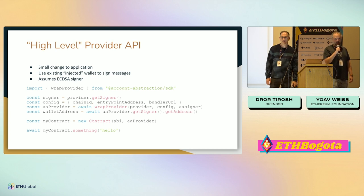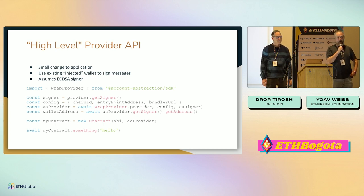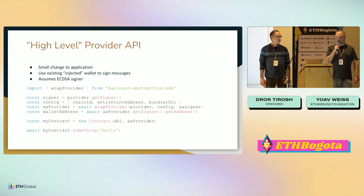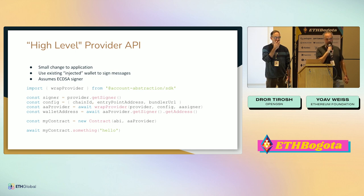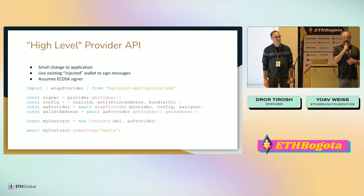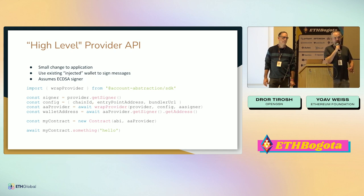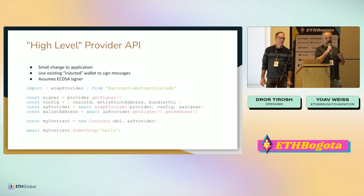This is not a hard fork — it's an ERC, meaning we need some bundlers to support it. Ideally it would be great if all nodes and all block builders support it, but we can start without that. We are starting a network of bundlers and hope it will expand over time because it's going to be profitable for block builders. When a block builder includes such a bundle in a transaction, the block builder gets paid for it, so block builders are incentivized to participate in this mempool and include these operations. It won't happen in one day, but it can happen over time.